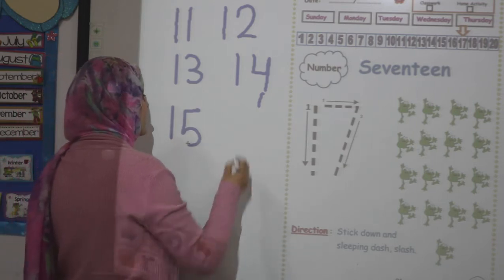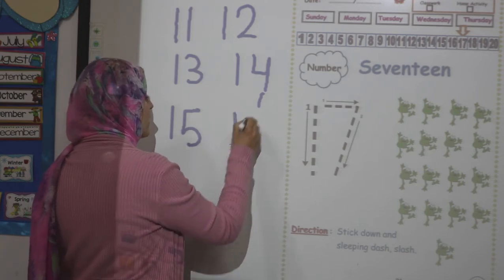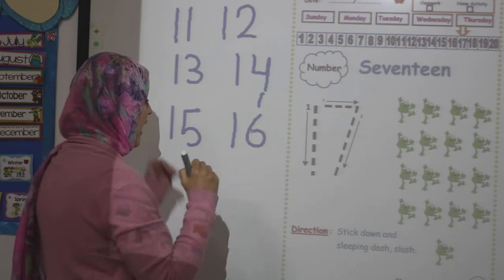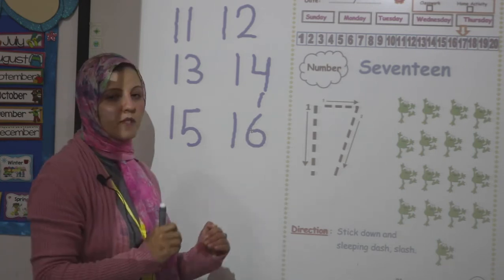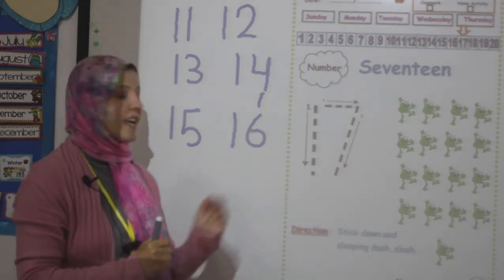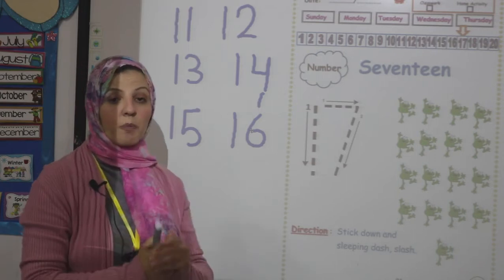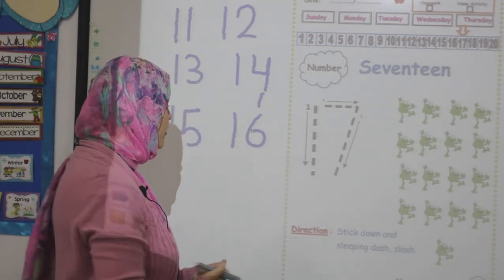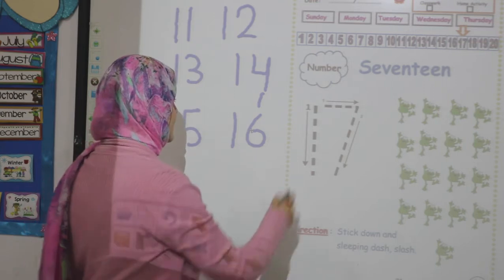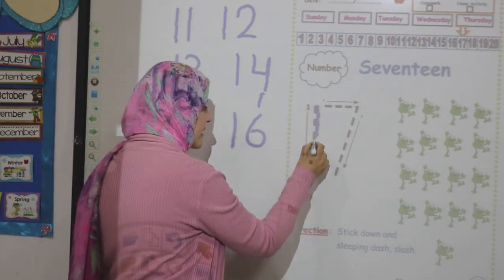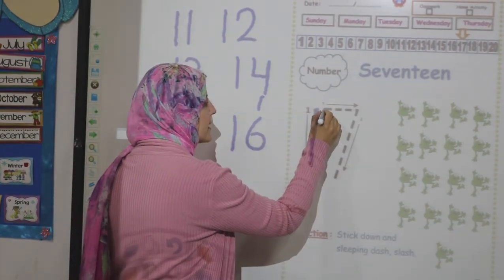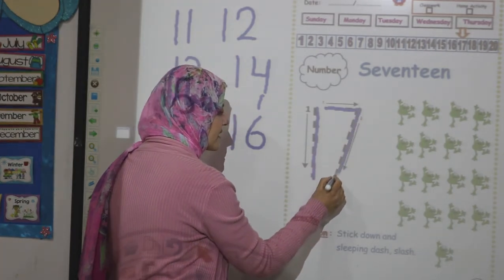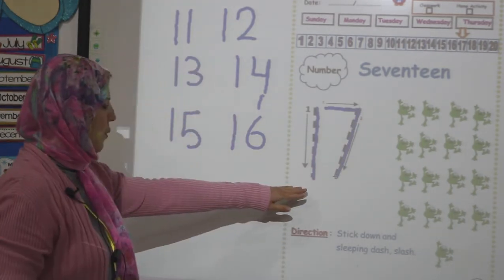What comes after 15? 16. How do we write number 16? Stick down, bending stick and semicircle. What comes after 16? 17. Our number for today is 17. How do we write number 17? Stick down, sleeping dash and slash.